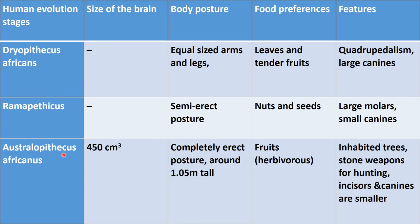Next is Australopithecus africanus. The brain size was 450 cm³. Their body posture was completely erect and their height was around 1.5 meters. Food preference was fruits — they were herbivores. Other features: they inhabited trees, used stone weapons for hunting, and their incisors and canines are smaller than those of Ramapithecus and Dryopithecus.